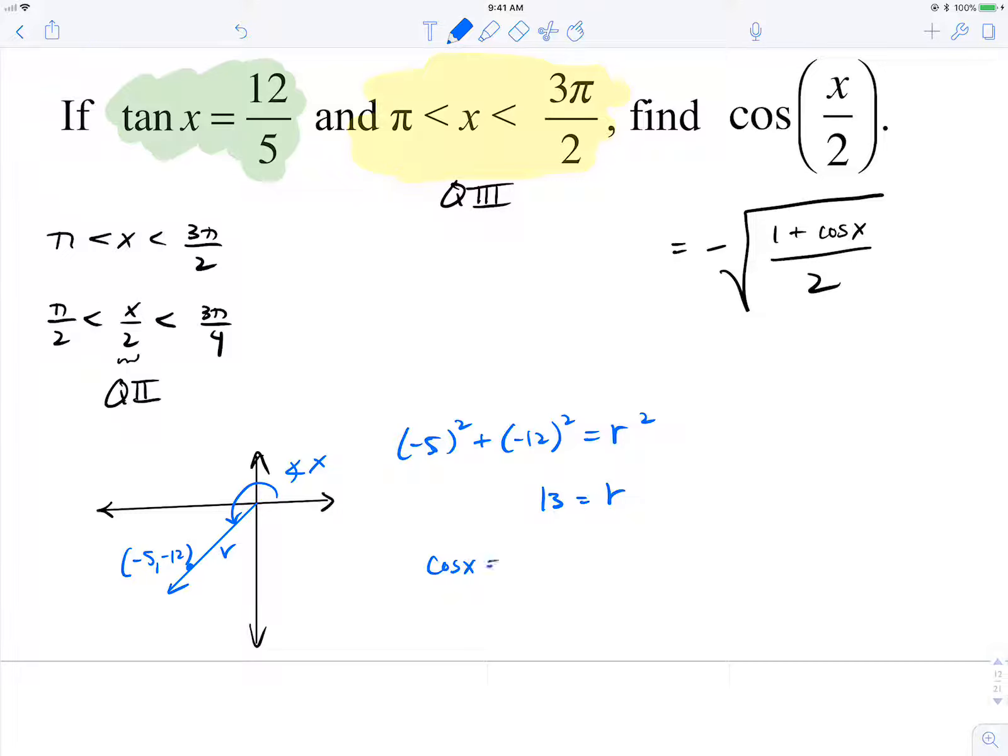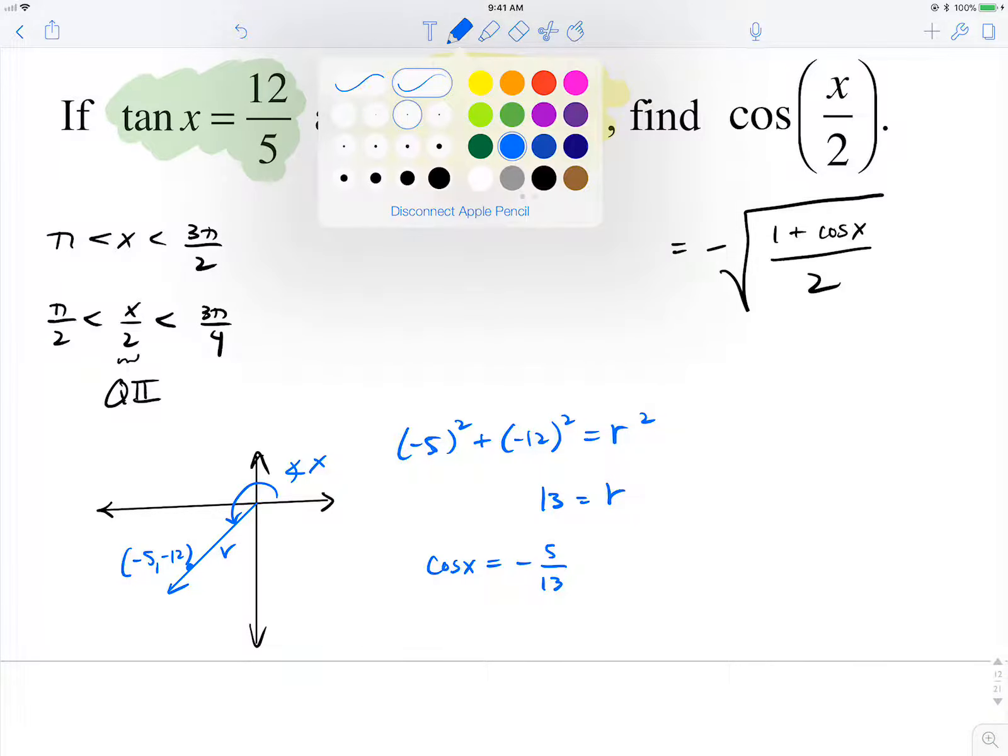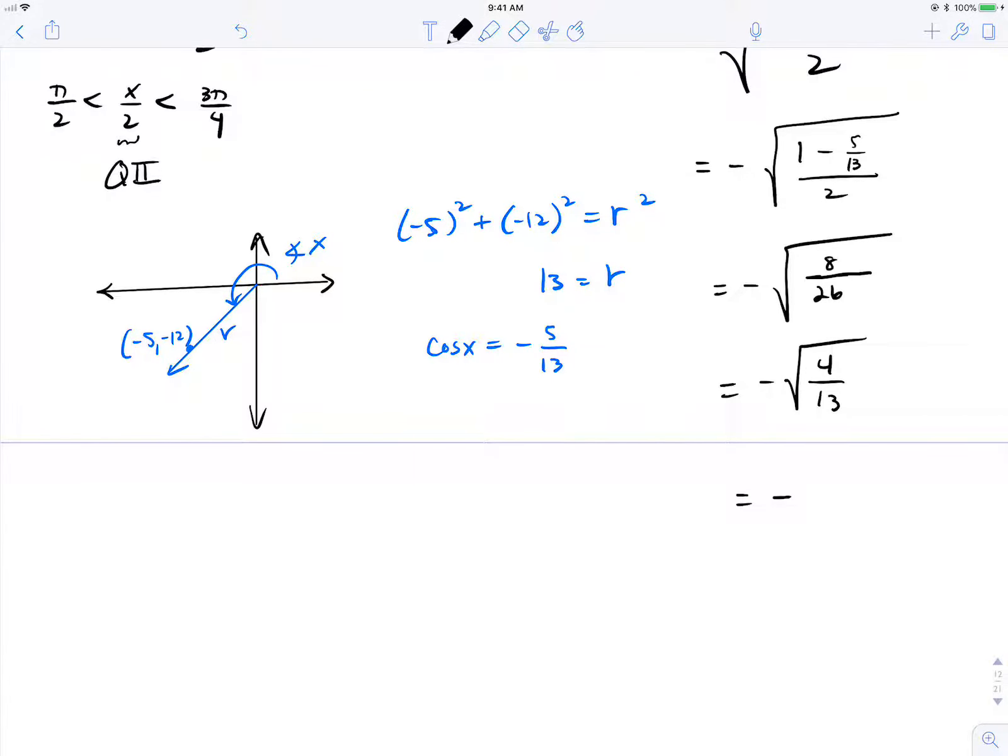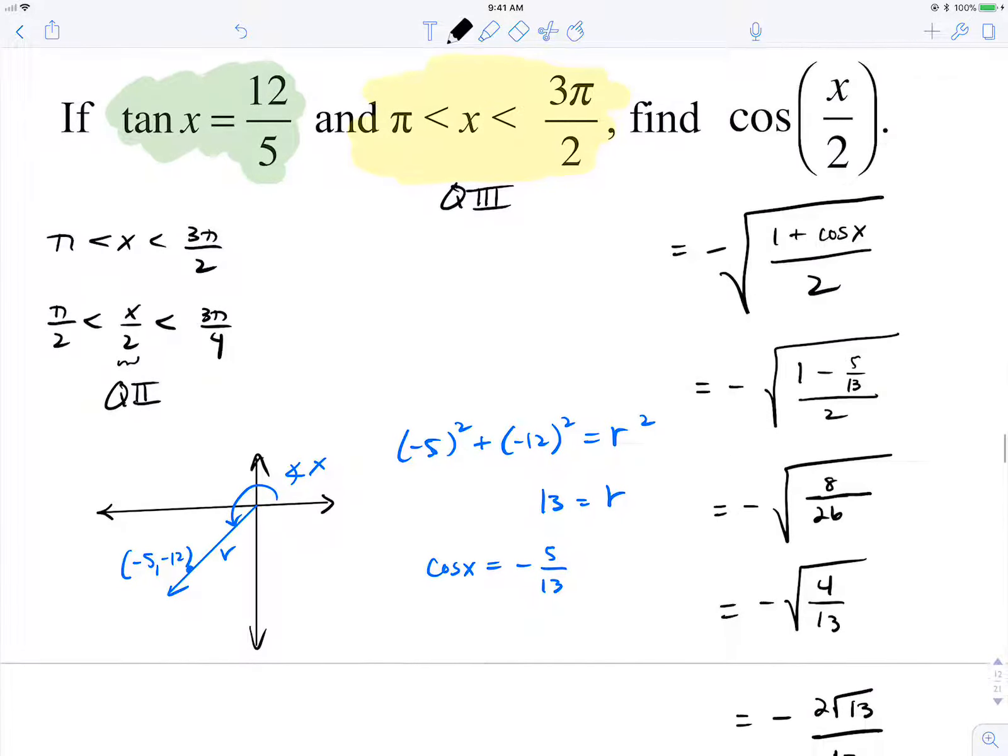So cosine of x is equal to negative 5 thirteenths. So to finish with the identity, we have 1 minus 5 thirteenths over 2. We need a common denominator, so that'll be 8 thirteenths divided by 2, which is 8 over 26. That's negative root 4 thirteenths. So negative 2 root 13 over 13 is what cosine of x over 2 is equal to.